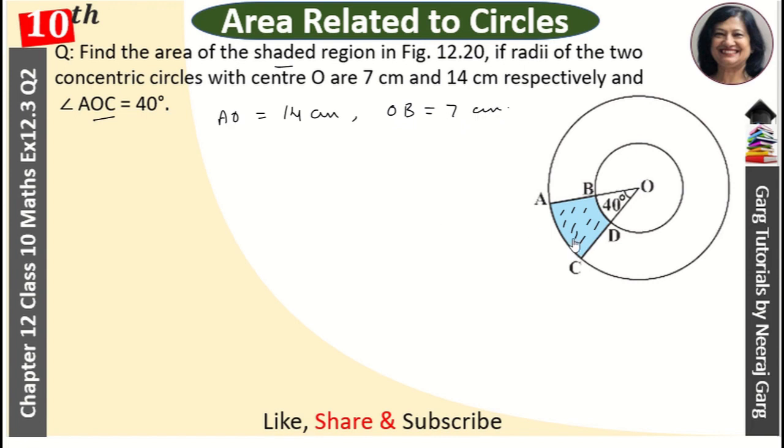AOC is given that is 14 cm and OB is given that is 7 cm. For area of shaded region, we can derive direct formula that is area of shaded region. That is equal to, what do you think? Think about it and tell in the comment section, what formula will you use?